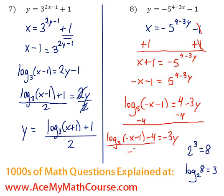Then we can just divide both sides by negative 3 and we're done. So y is equal to log base 5 of negative x minus 1 divided by negative 3. And if you want you can even break this down right, you can make it positive 4 over 3 because negative 4 divided by negative 3 is just 4 over 3.